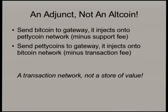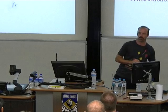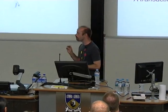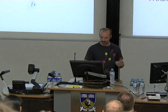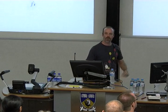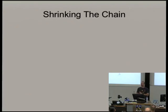Let me emphasise this: this is a transaction network, not a store of value. There are arguments over whether or not Bitcoin is a store of value, but I certainly guarantee you that Petticoin is not a store of value. We're aiming for a transaction network, not a place to put your money and let it rot. So we've got a separate network and we can do whatever we want with it — how are we going to make a Bitcoin-alike that is more efficient?